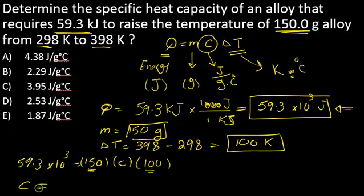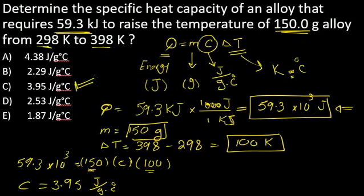So C will be, if you do the calculation, 3.95 Joules per gram Celsius, and this gives me the correct answer.